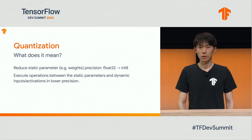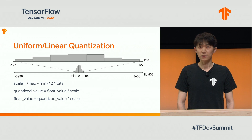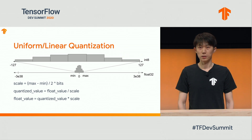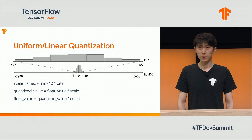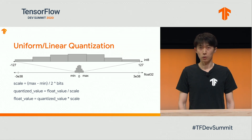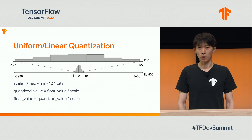Now let's dig a bit more into how we perform quantization. As a concrete example, imagine we have a tensor with float values. In most cases, we are wasting most of the representation space in the float number line. If we can find a linear transformation that maps the float value onto int8, we can reduce the model size by a factor of 4. Computations can then be carried out between int8 values, and that is where the speedup comes from.